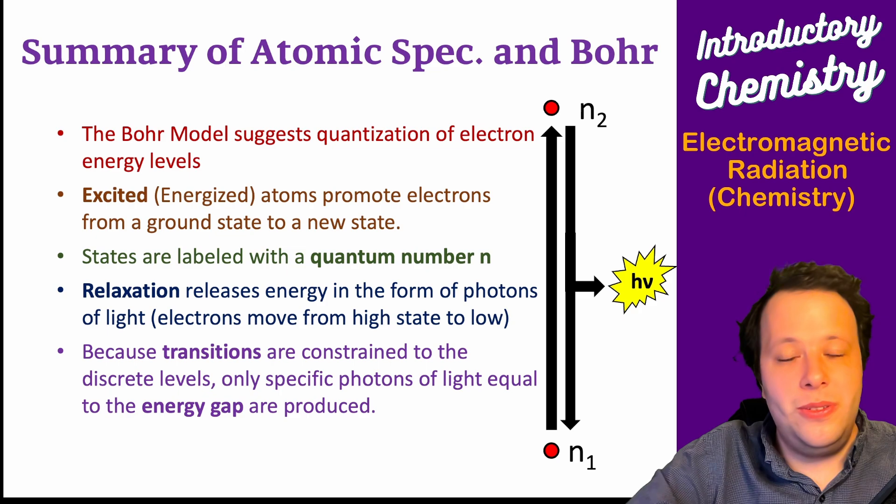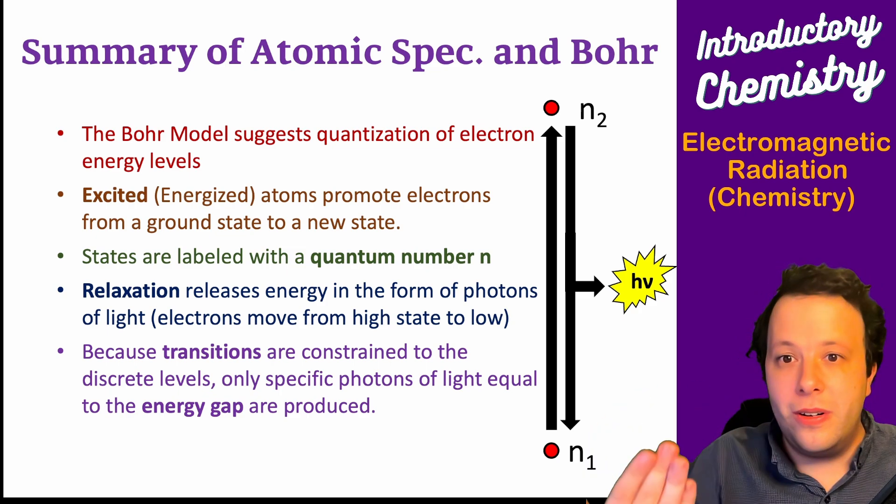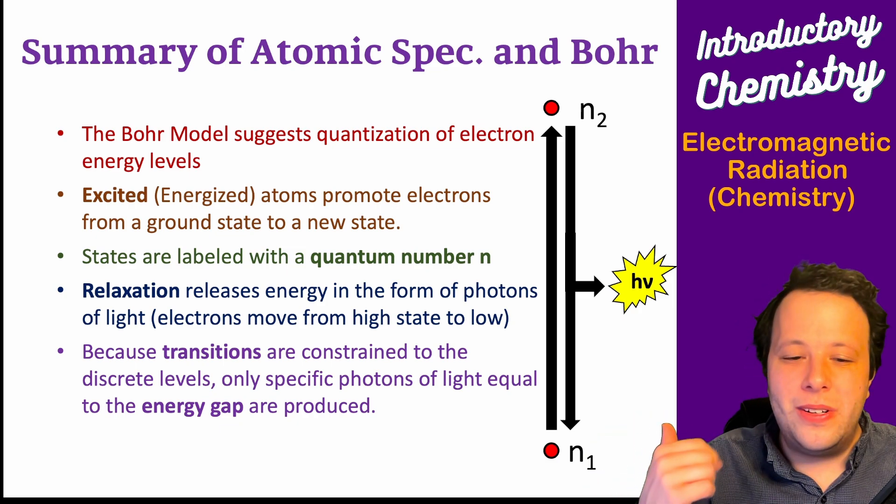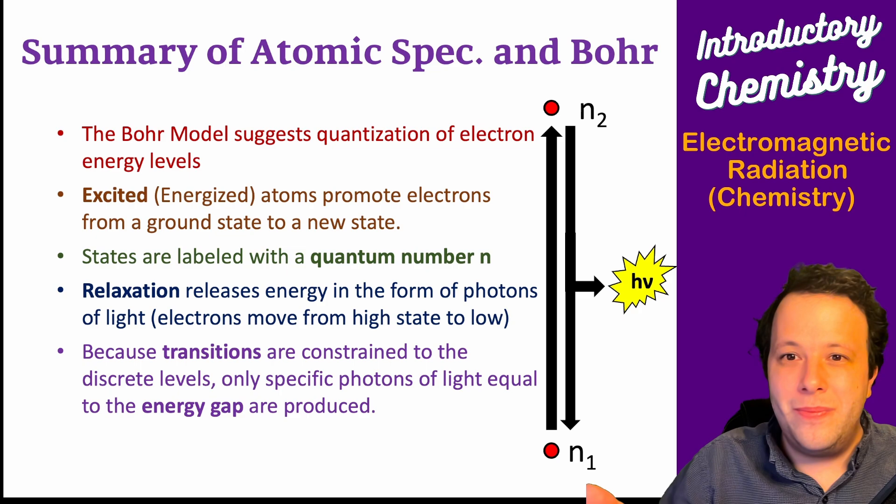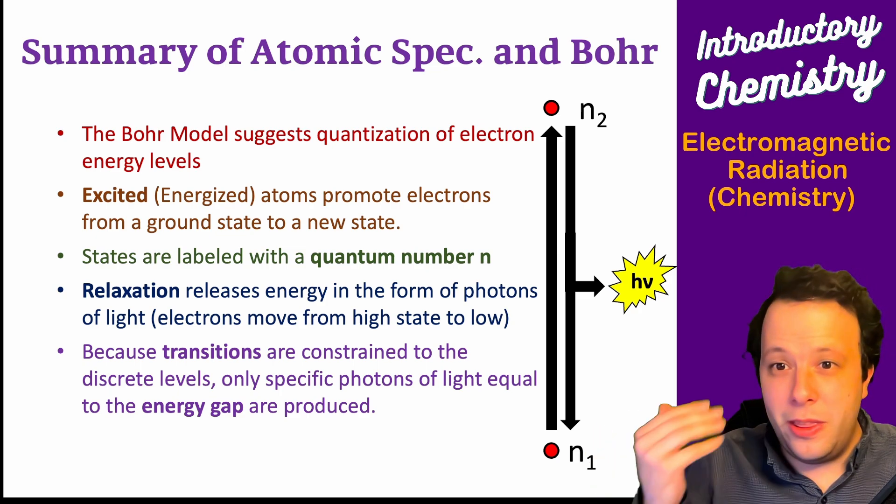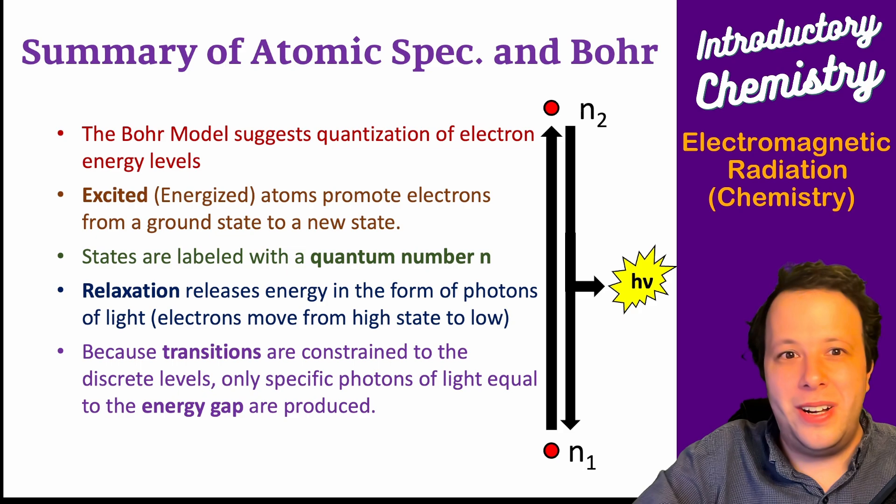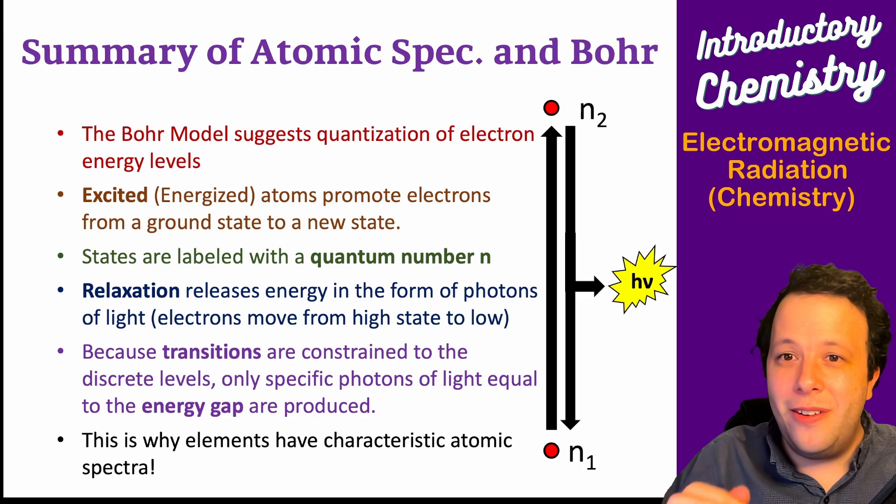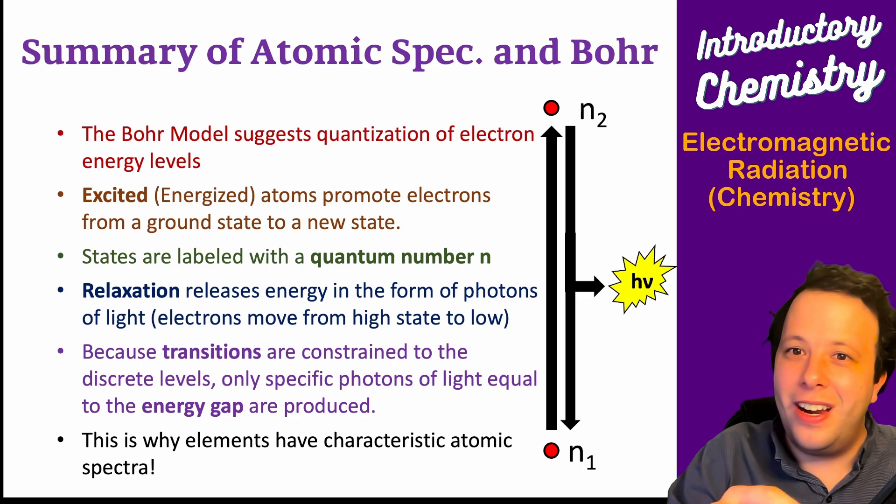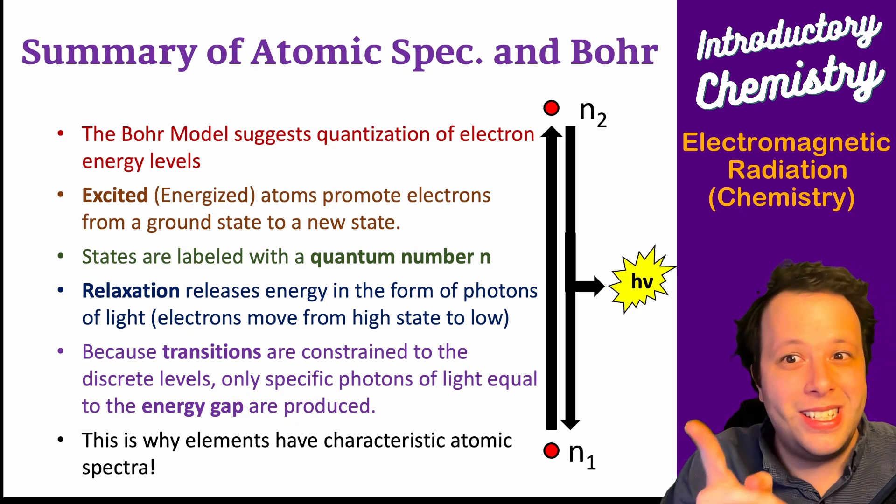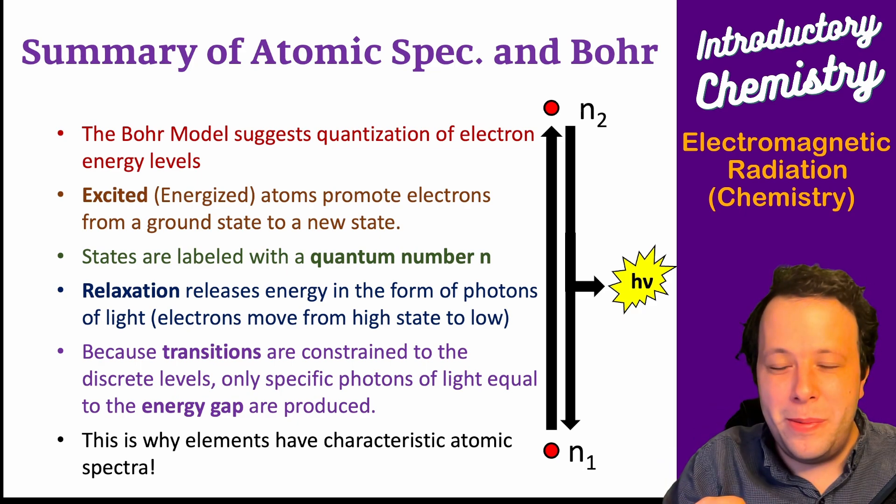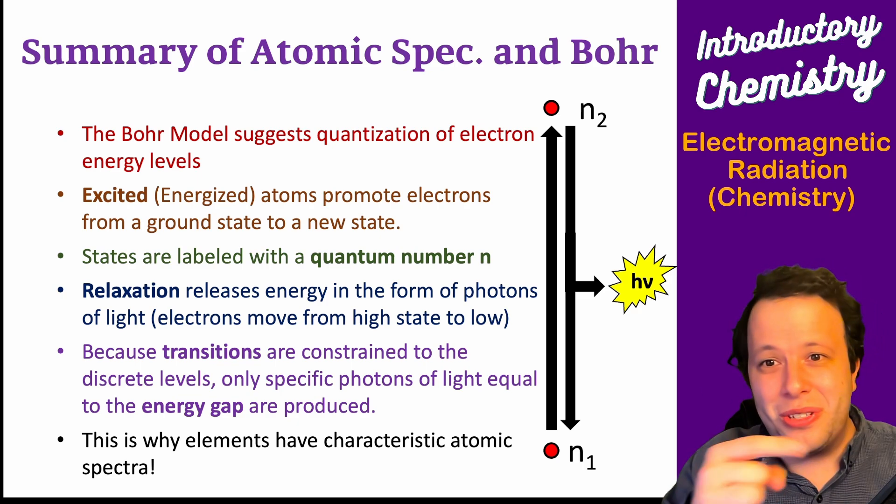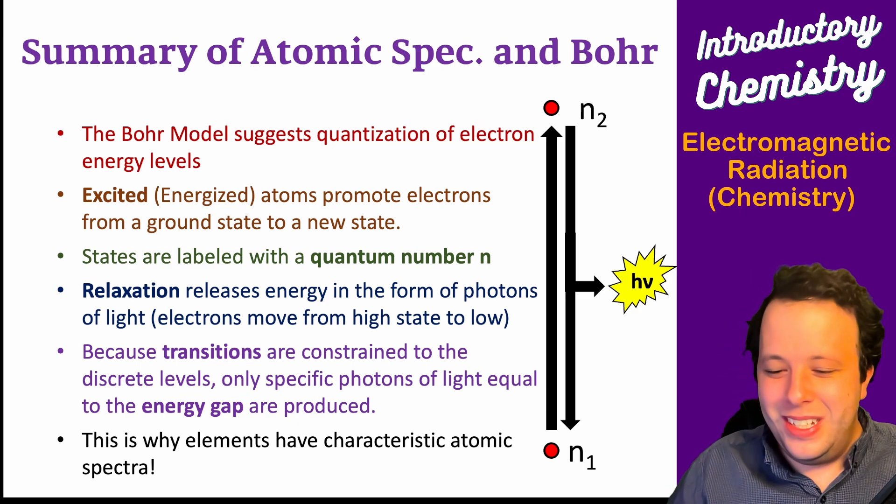You can calculate these different levels using the formulas I showed earlier: energy equals h times nu, or energy equals h times the speed of light divided by the wavelength. This essentially tells you that every element has its own characteristic spectrum, showing that every element's different and lets you see how subatomic particles exist and they all behave differently, which is the cool part.